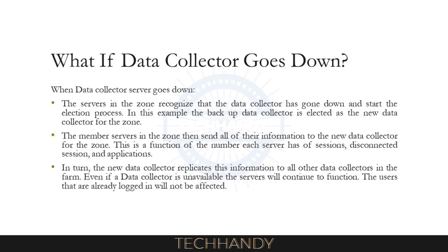What happens if the Data Collector goes down? When a Data Collector server goes down, the servers in the zone recognize this and start an election process. The backup data collector is elected as the new data collector for the zone, and the member servers then send all of their information to the new data collector. This involves the number of sessions, disconnected sessions, and applications each server has. The new data collector replicates this information to all other data collectors in the farm. Even if a data collector is unavailable, the servers will continue to function, and users that are already logged in will not be affected.